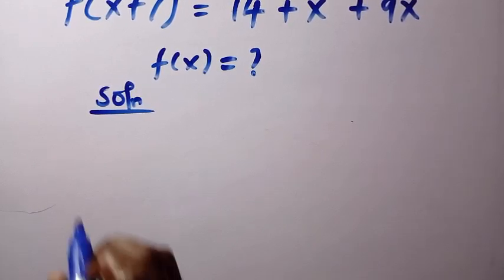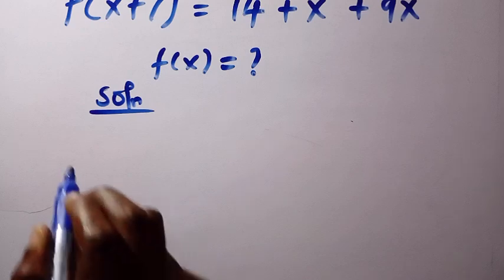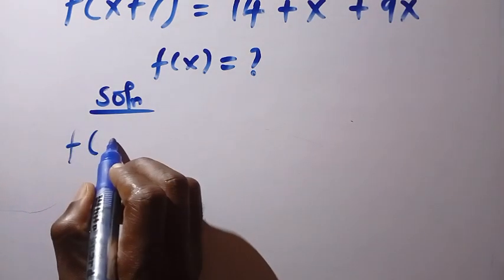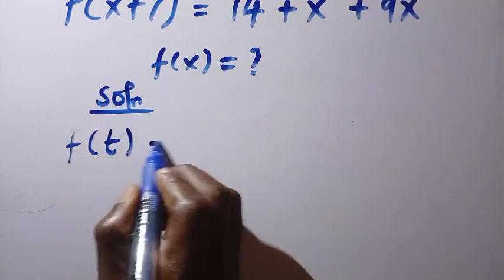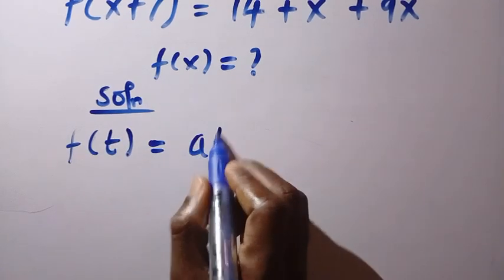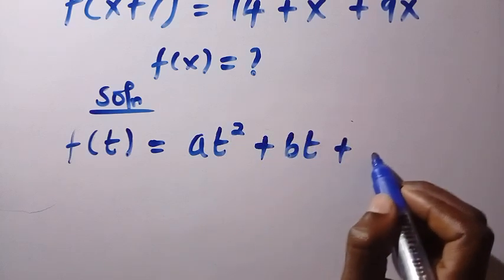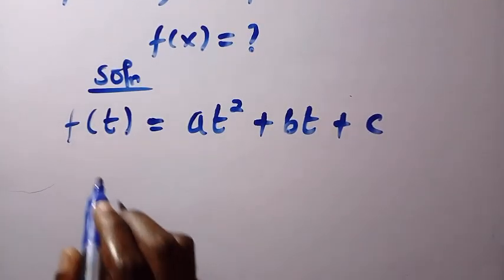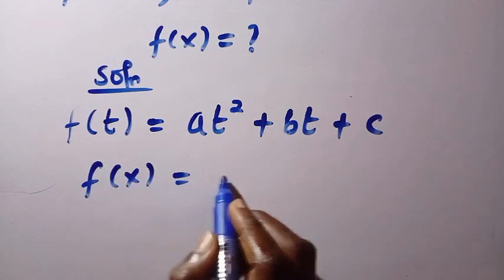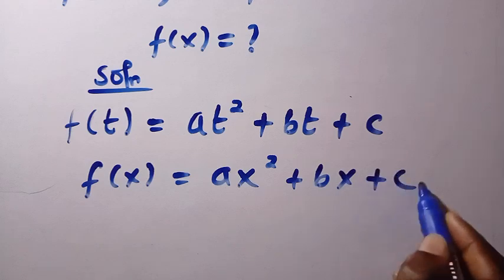So, for the second method, since what we are given is a quadratic, and if we assume a general quadratic function, let's say f of t equals a t squared plus b t plus c. But, since it is f of x that was given, we are going to change this to f of x equals a x squared plus b x plus c.